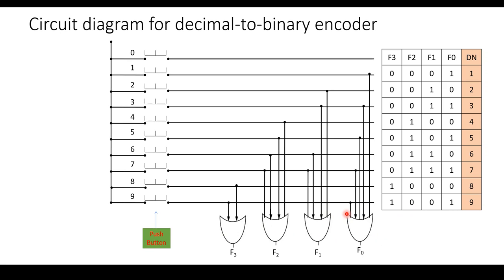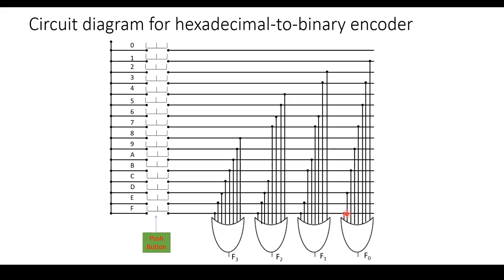Once you connect all the lines, your circuit diagram is ready for the decimal to binary encoder. This is how you draw the circuit diagram. Next we are going to see the circuit diagram for the hexadecimal to binary encoder, which is similar to the decimal to binary, except you draw 16 lines because it has 16 numbers.